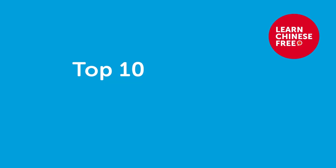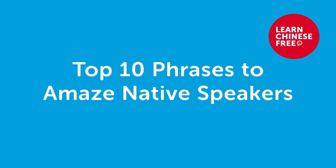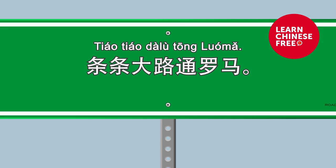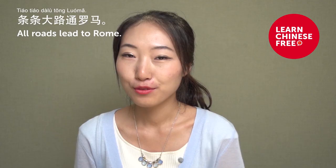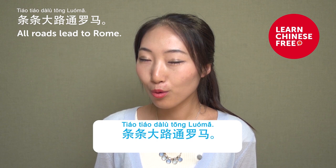10 phrases to amaze native speakers. Let's begin. 條條大路通羅馬 — all roads lead to Rome. You can use this when your friends fail an exam and you say: ah, it's okay, 條條大路通羅馬 — all roads lead to Rome.